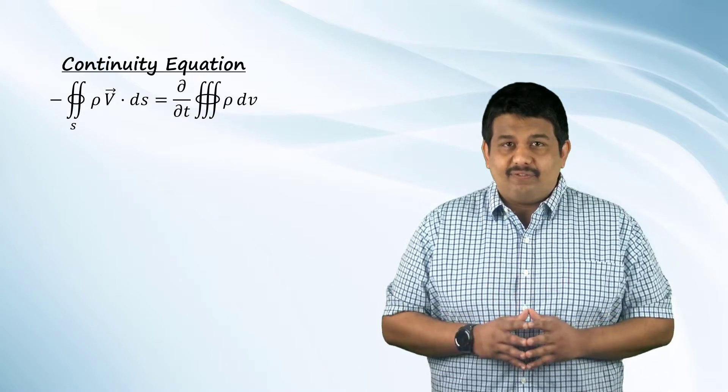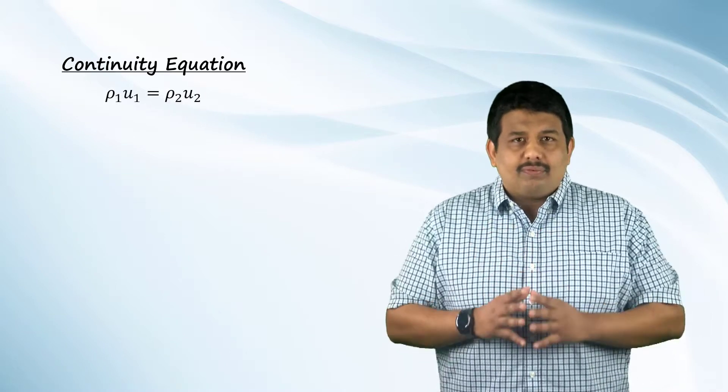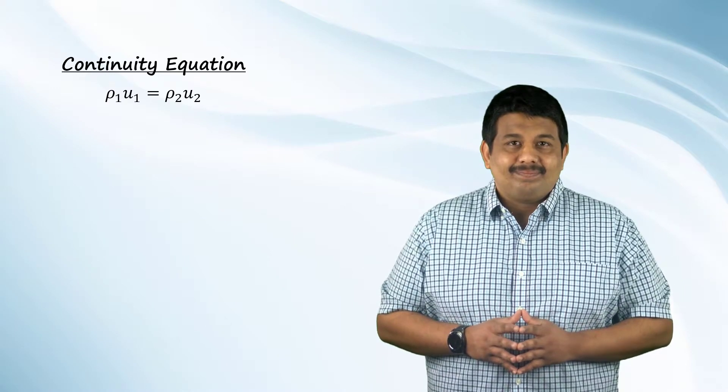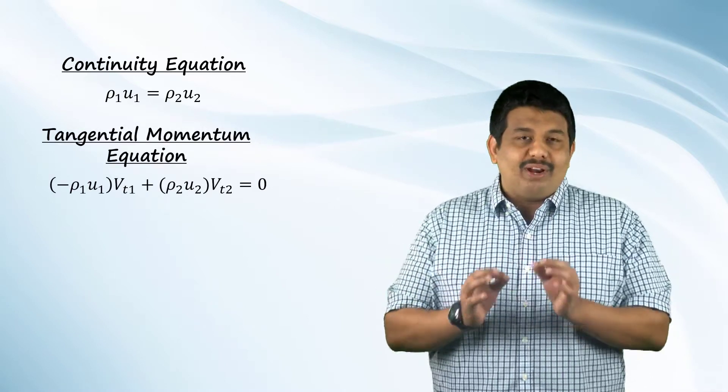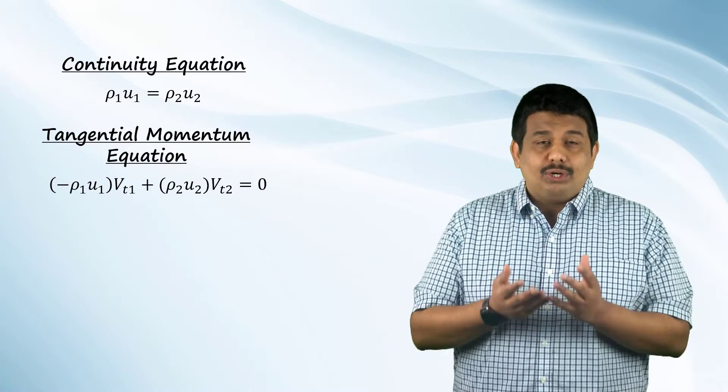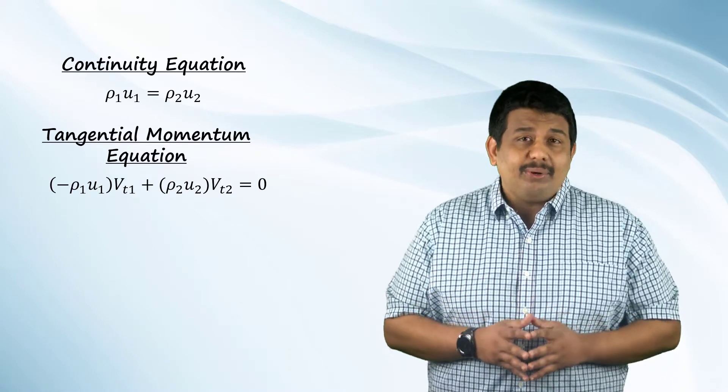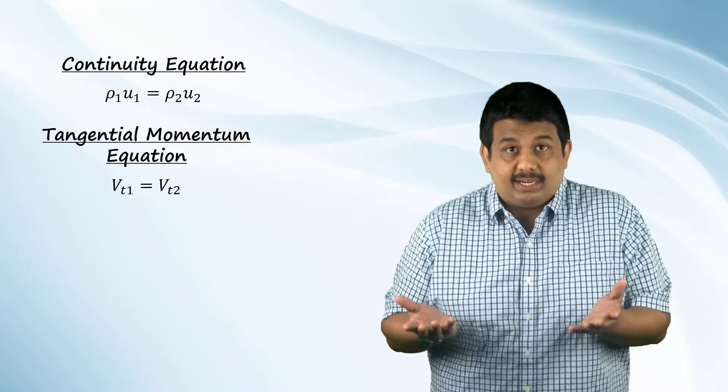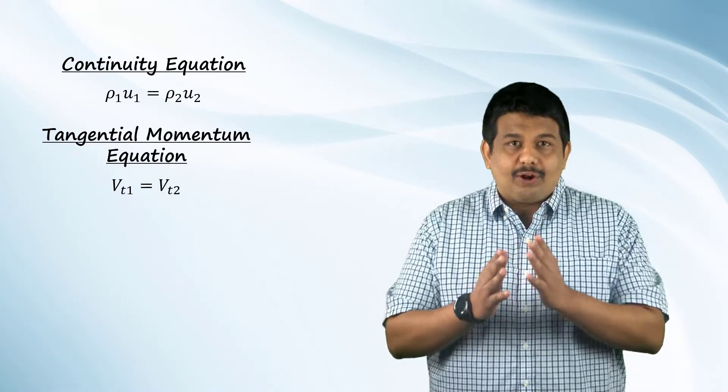It is easy to show that the continuity equation assuming a steady flow, i.e., there is no change of properties with time, can be transferred to the following form, where U2 is the downstream shock normal velocity. The tangential component of the momentum equation with a steady flow and no boundary force assumption can be transformed to the equation shown here. Manipulating this equation using the continuity equation, we get that Vt1 is equal to Vt2. The shock parallel velocity component is the same upstream and downstream of an oblique shock.